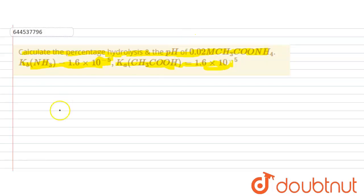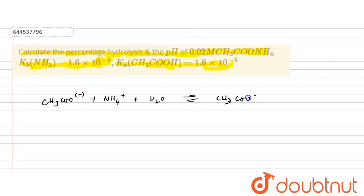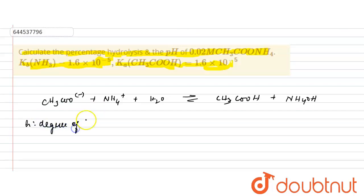So let's see how the reaction is taking place. CH₃COONH₄ in water gives CH₃COOH plus NH₄OH. If we consider KH, where H is the degree of hydrolysis, then KH is the hydrolysis constant.